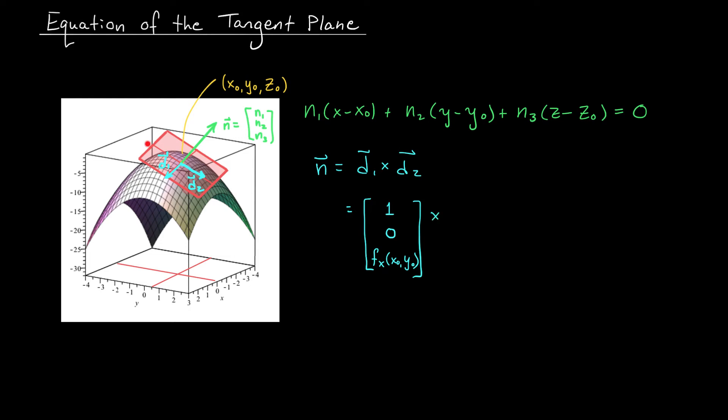d2 moves exclusively in the y-direction, so its x-component is zero. We can also assume that we're taking one step in the y-direction because the length doesn't matter here. How do we expect the z-value to change? Well, since we're moving along a tangent line, the slope is going to be fy of x-naught, y-naught. And that will be our change in z. I'll let you work through the cross-product calculation, but what you should get is minus fx x-naught y-naught, minus fy x-naught y-naught, and 1. This is our normal vector n.